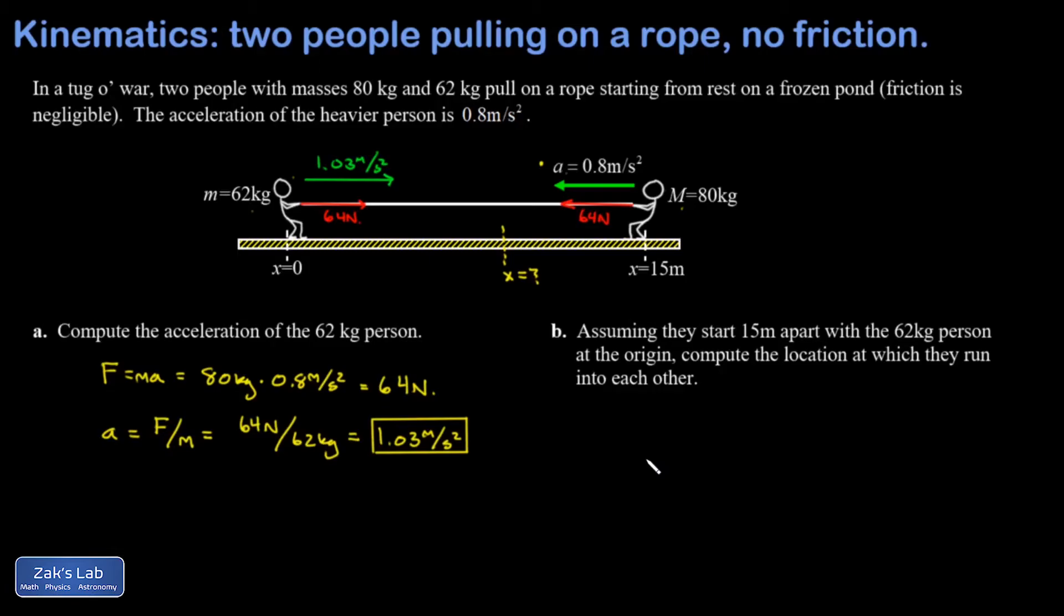The way we handle these kinematics problems where there's two objects moving is we use the standard equations for kinematics to write down a position versus time function for each person. That's really just the first kinematics formula. So for the smaller person, provided the acceleration is constant, you can say x equals x_0 plus v_0 t plus one half a t squared.